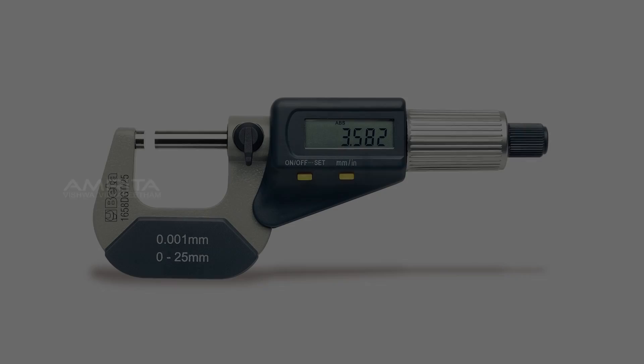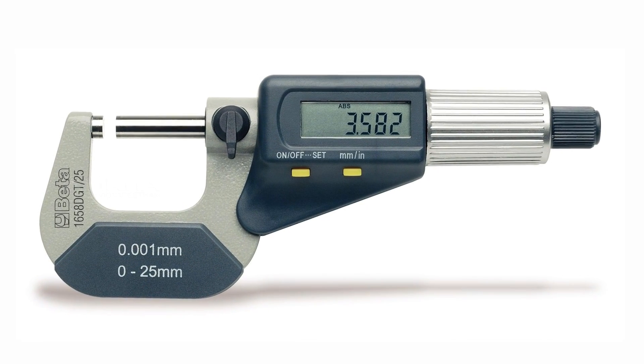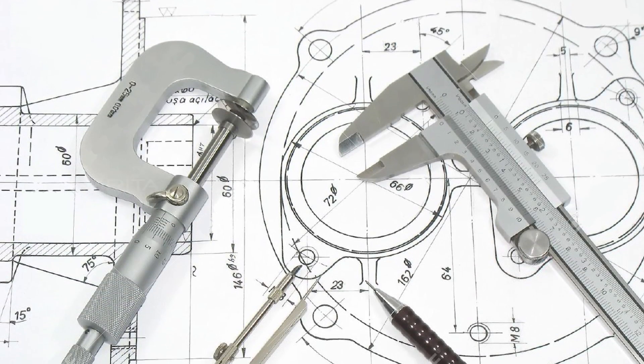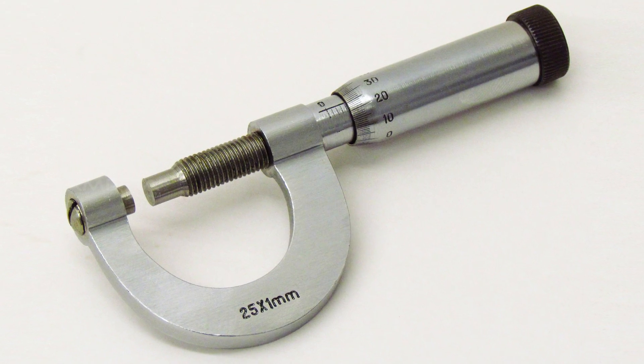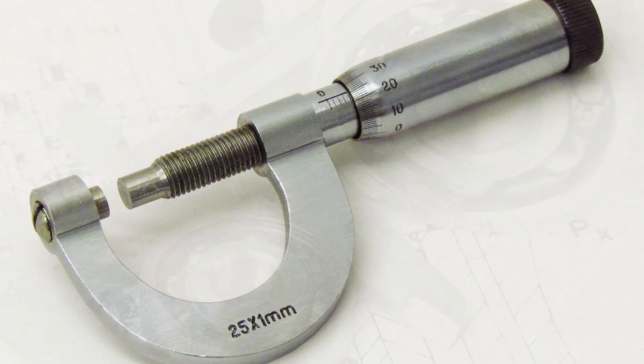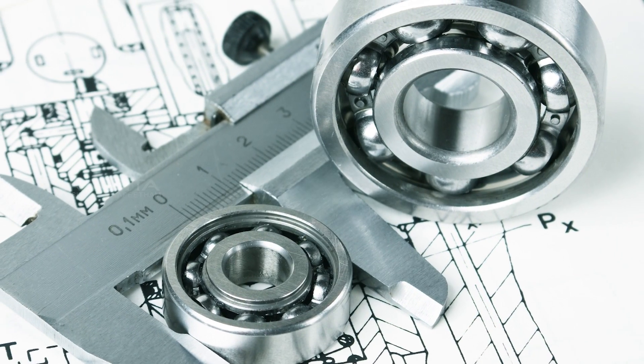Applications. The screw gauge is extensively used in the engineering field for obtaining precision measurements. It is also used to measure the diameter of very small objects that a vernier caliper can't measure.